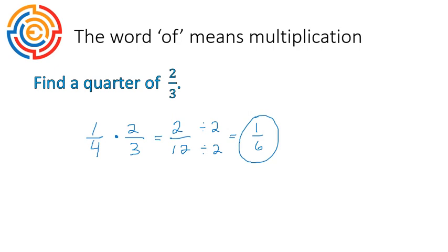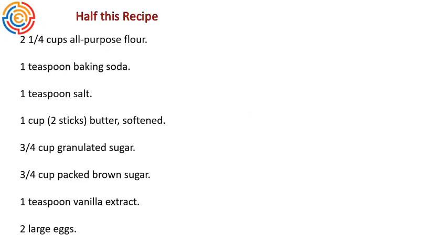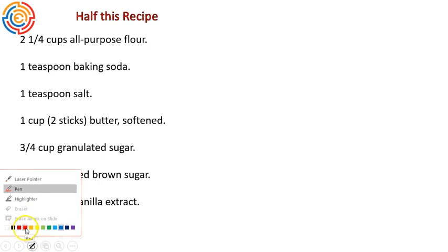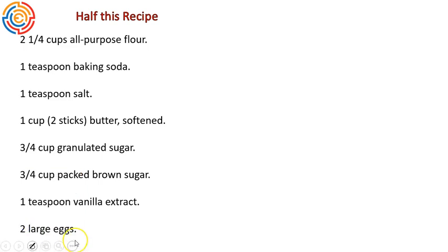For the next word problem, we're going to look at halving a recipe. This is actually a very common skill, something that we do often. And you'll notice that the process of doing this is the same as dividing by two. Half of something means multiplying times one-half, or dividing by two. It will do the same thing.